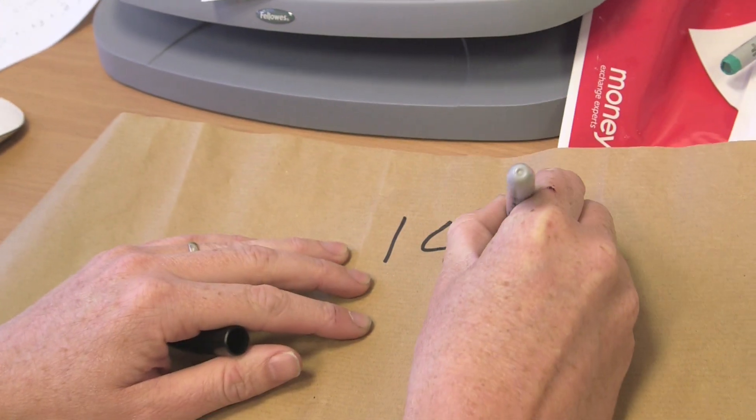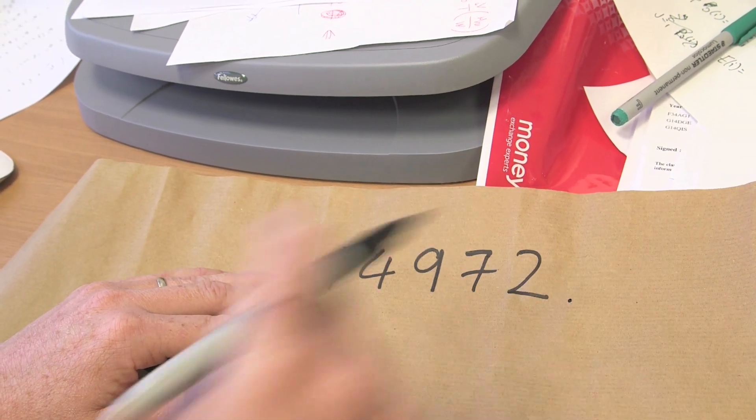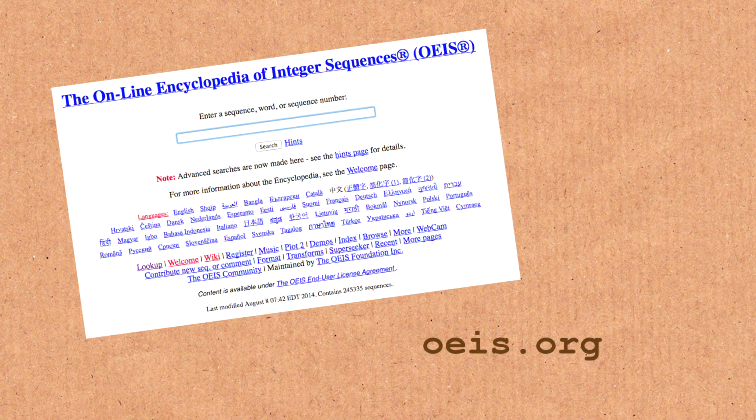I'm going to write down a number for you, Brady: 14972. What's interesting about that number? As of a couple of days ago, I've been reliably informed that this is the smallest number not to appear in any sequence in the Online Encyclopedia of Integer Sequences.